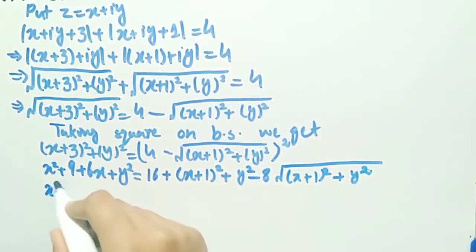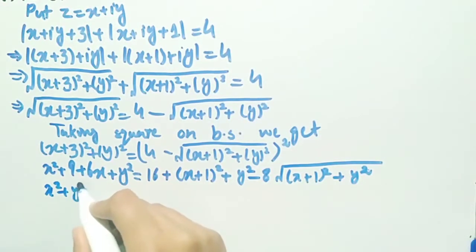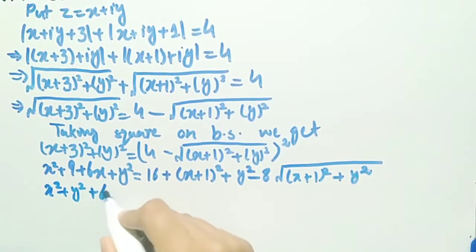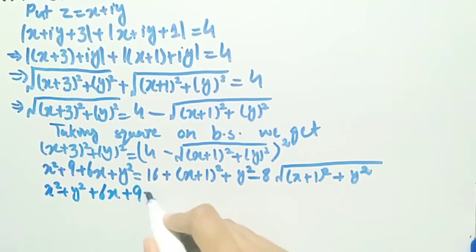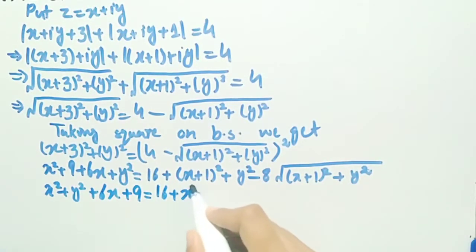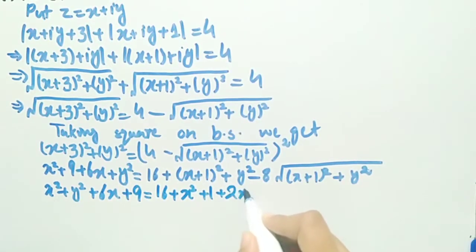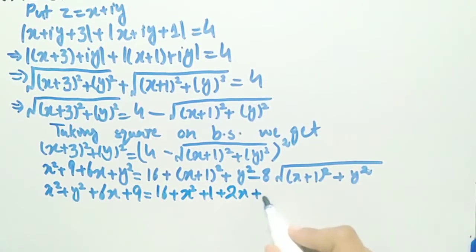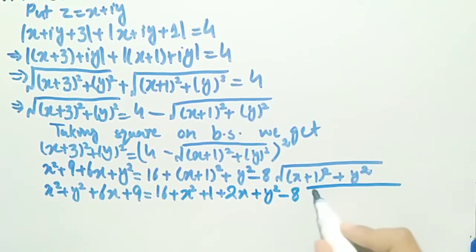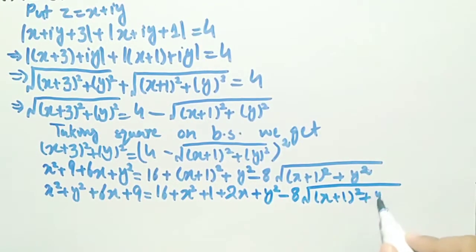We can rewrite the left side as x square plus y square plus 6x plus 9, equal to 16 plus x square plus 1 plus 2x — this is the expansion of (x plus 1) whole square — plus y square, minus 8 times square root of (x plus 1) square plus y square.